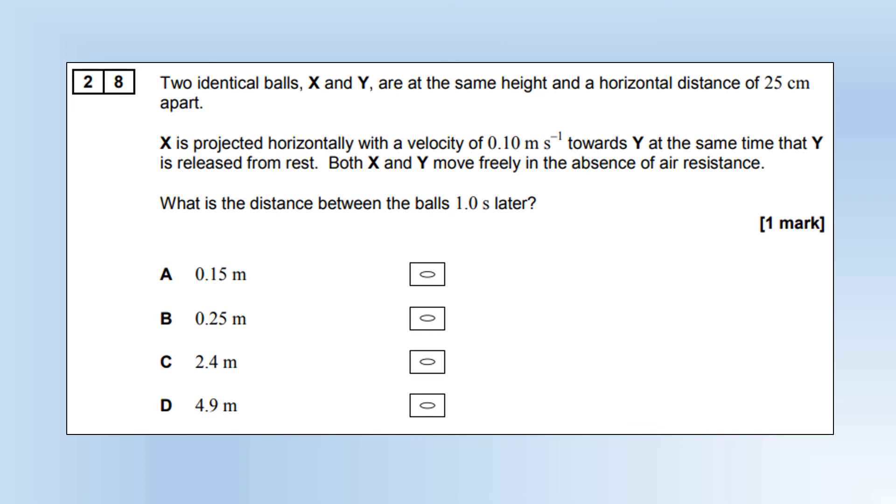Two identical balls, X and Y, are at the same height and a horizontal distance of 25 centimeters apart. X is projected horizontally, with a speed of 0.1 meters per second towards Y. At the same time, Y is just released. They both move with no air resistance. What is the distance between the balls one second later? They have the same initial vertical component of velocity, 0. So they're going to always be at the same height as each other. So the only thing that matters is the horizontal velocity and the time. So multiplying those two together gives us essentially that they're going to be 0.15 meters away.